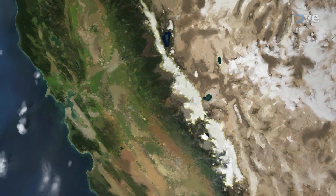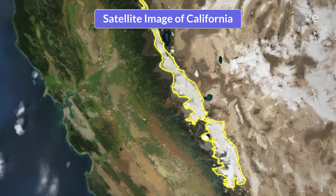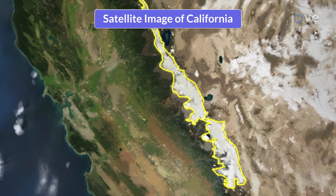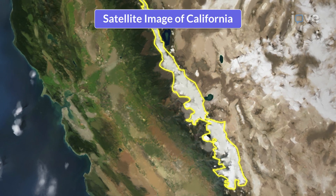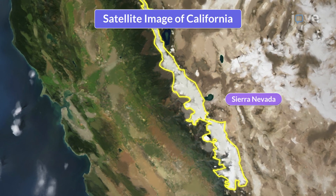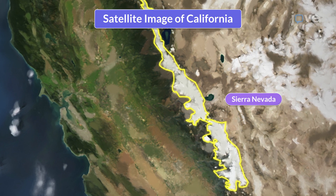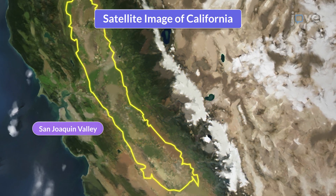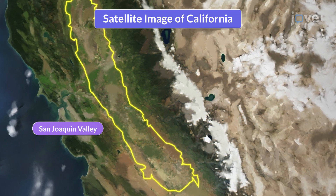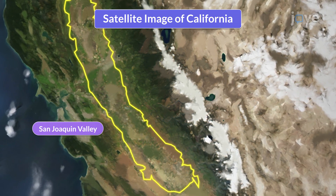For example, a satellite image of California illustrates this. The towering snowy peaks of the Sierra Nevada represent high elevations, while the smooth, wide San Joaquin Valley showcases low, flat areas.